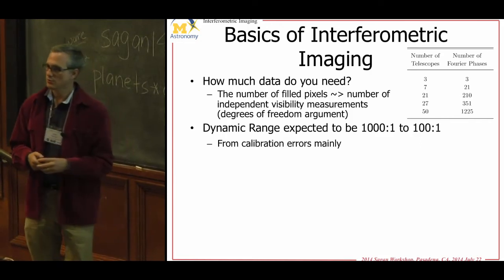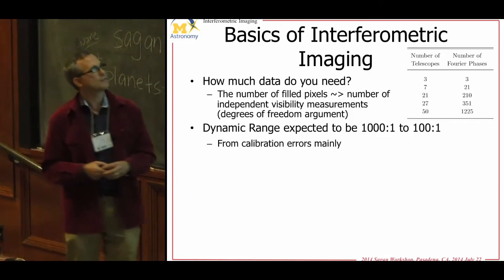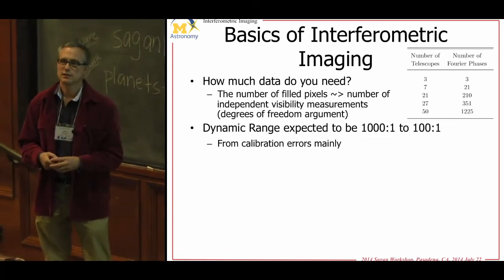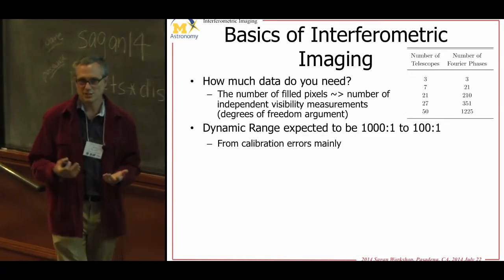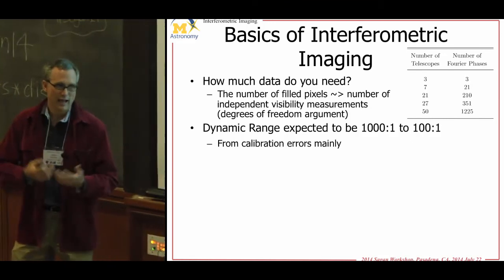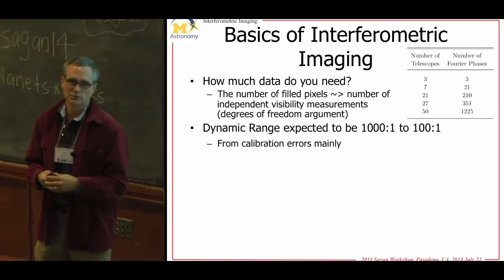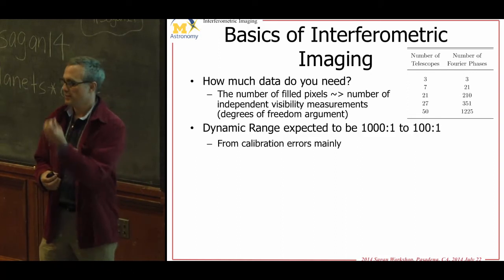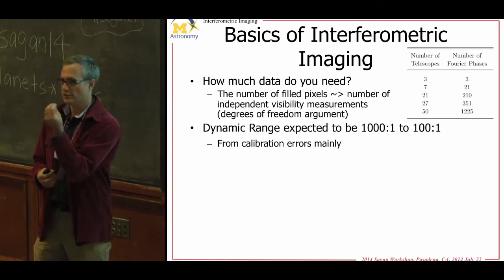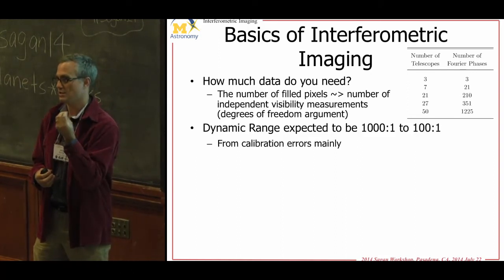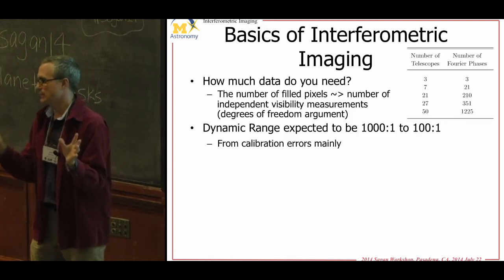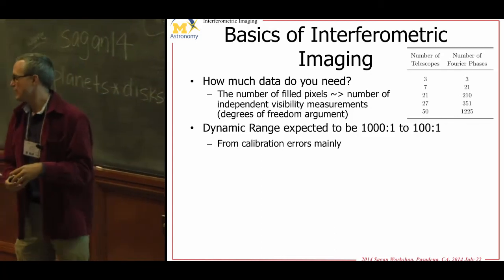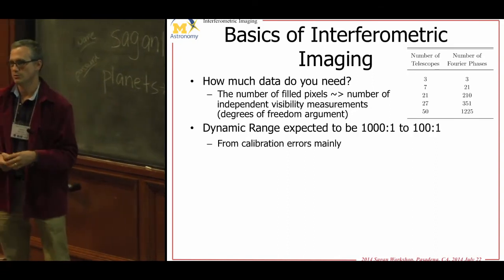Dynamic range is related to your precision. Roughly speaking, 1,000-to-1 precision on your quantities gives you about 1,000-to-1 dynamic range. It's similar to an AO system — it takes light that should be reconstructed in the core and spreads it out analogously to a speckle pattern, putting it somewhere else in the image. Dynamic ranges are very closely linked to your measurement precision.